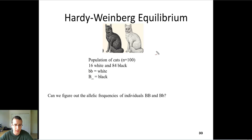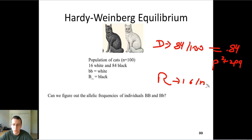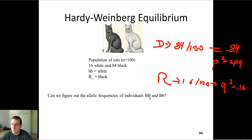That 0.84 represents P-squared plus 2PQ, which is hard to differentiate between. But the recessive phenotype — 16 out of 100 cats — gives us Q-squared equals 0.16. Now, what they're asking is: if you know Q-squared, can you find how many individuals are homozygous dominant and how many are heterozygous? That's exactly what we use the Hardy-Weinberg theorem for — working backwards from what we did before.